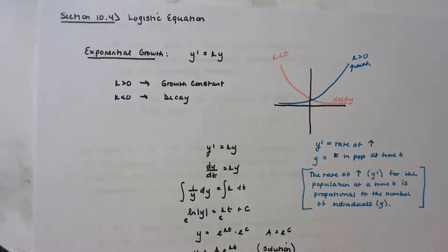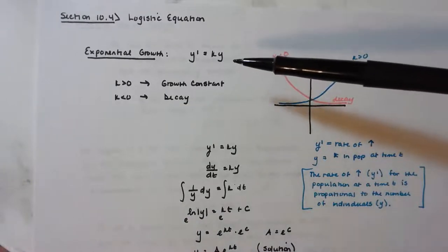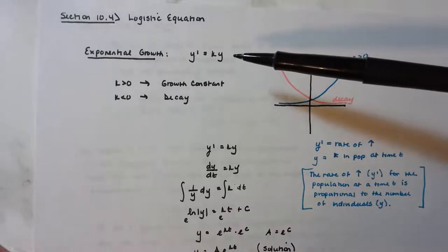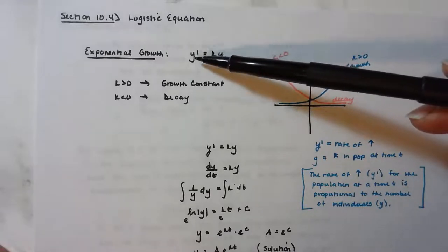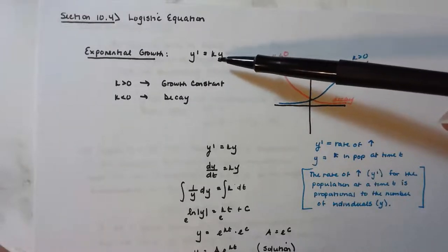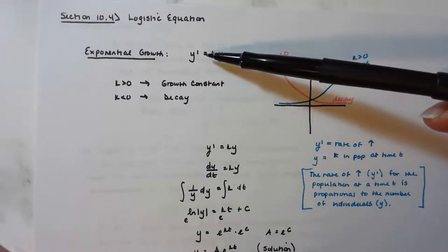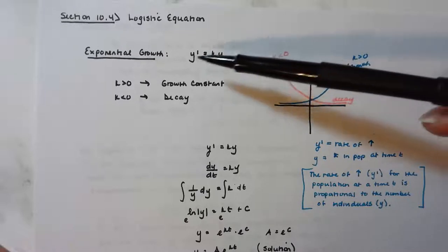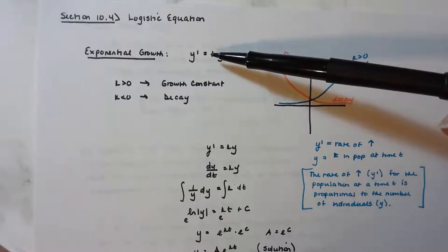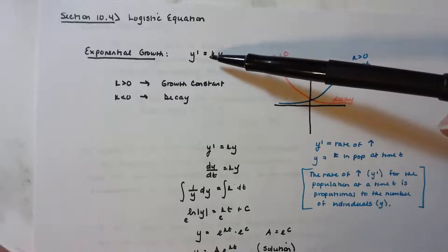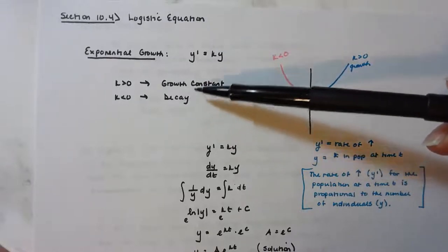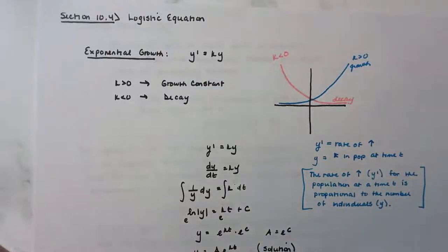Let's start with exponential decay — something you probably remember from Algebra 2 and Pre-Calculus. This is the differential equation that models exponential growth: dy/dt is equal to k times y. Here, k is called the growth constant. When k is positive, the population or bacteria is growing; when k is negative, we're talking about decay, such as radioactive decay.